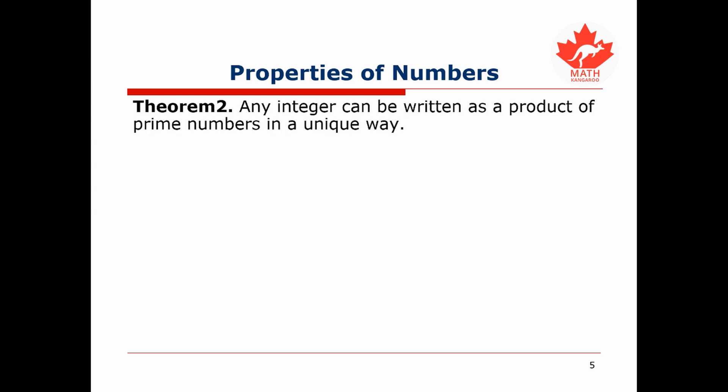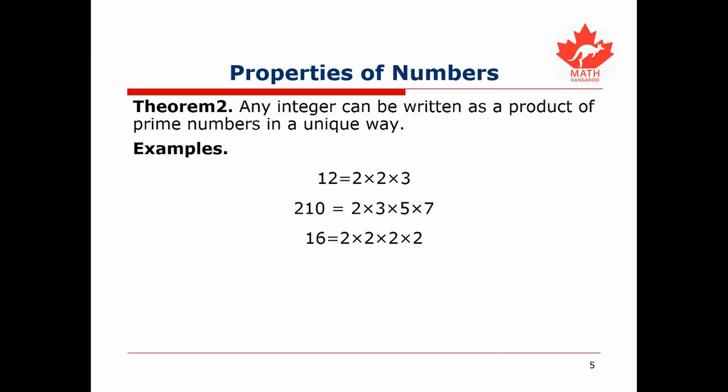A second very important theorem tells us that any integer can be written as a product of prime numbers in a unique way — this is its prime factorization. For example, 12 equals 2 times 2 times 3, and both 2 and 3 are prime. Another example is 210, which equals 2 times 3 times 5 times 7 — the product of the first four prime numbers. The number 16 is 2 to the fourth power, and there is no limit on the number of times a prime can appear.